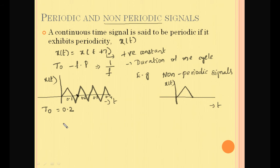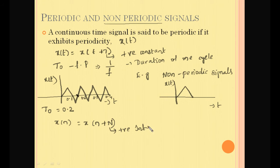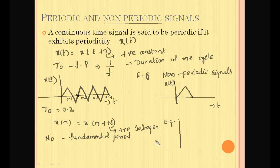Now let us look into discrete time signals. A discrete time signal is said to be periodic if it satisfies the condition x(n) = x(n + N), where N is a positive integer. The smallest value of N for which this is satisfied is called the fundamental period. Let us represent a discrete time periodic signal with axes n and x(n).